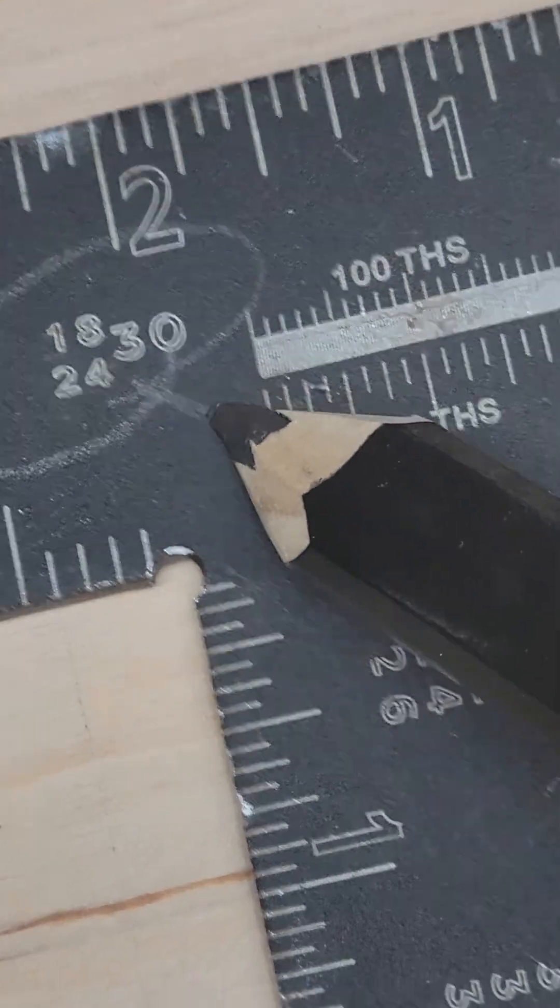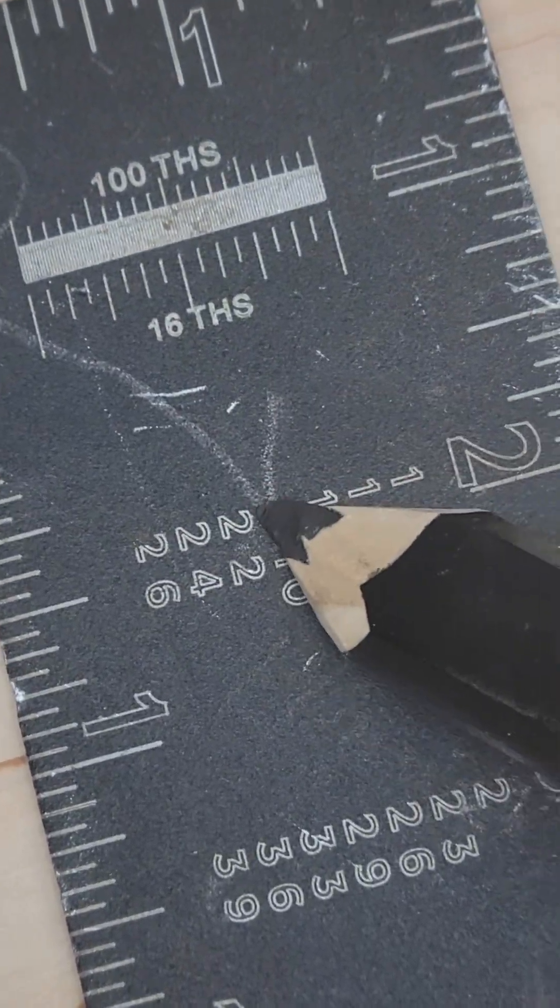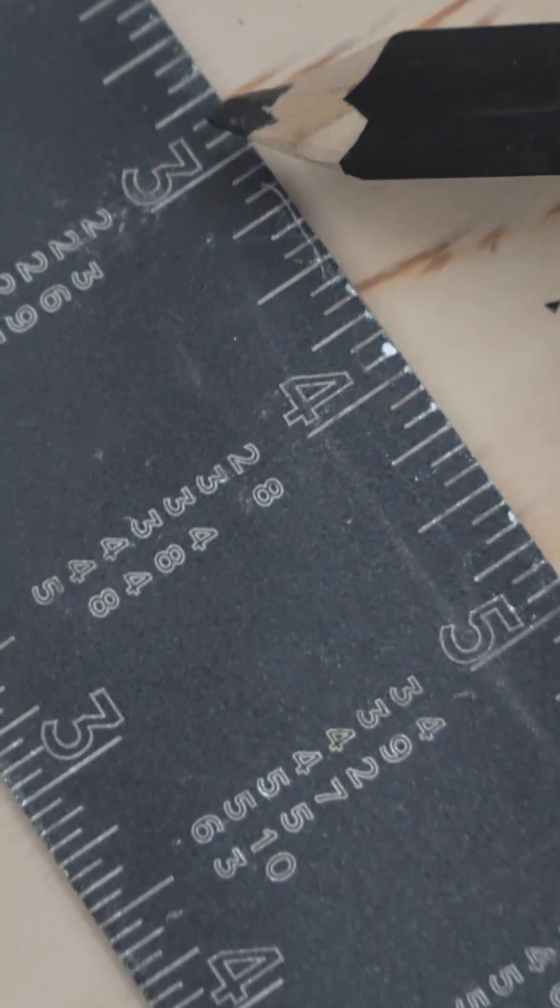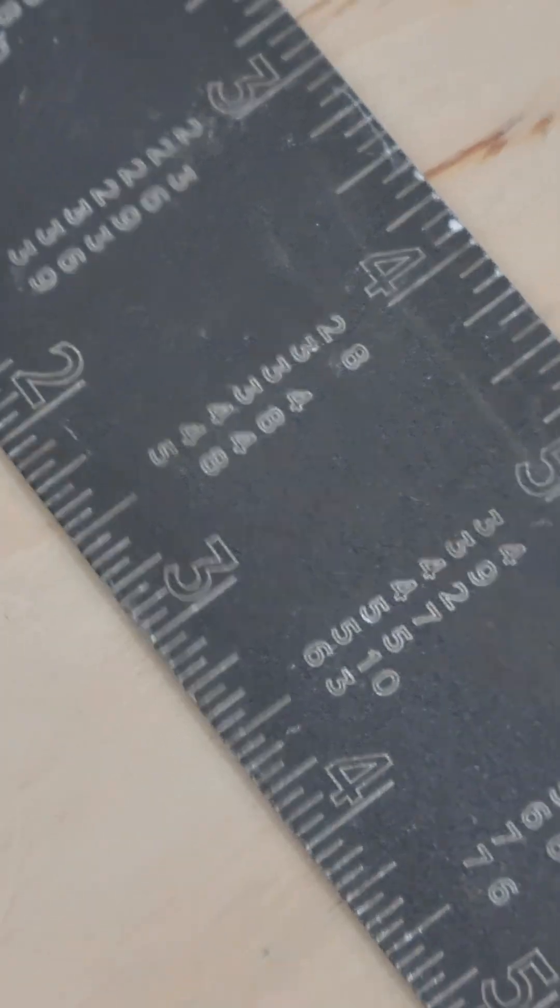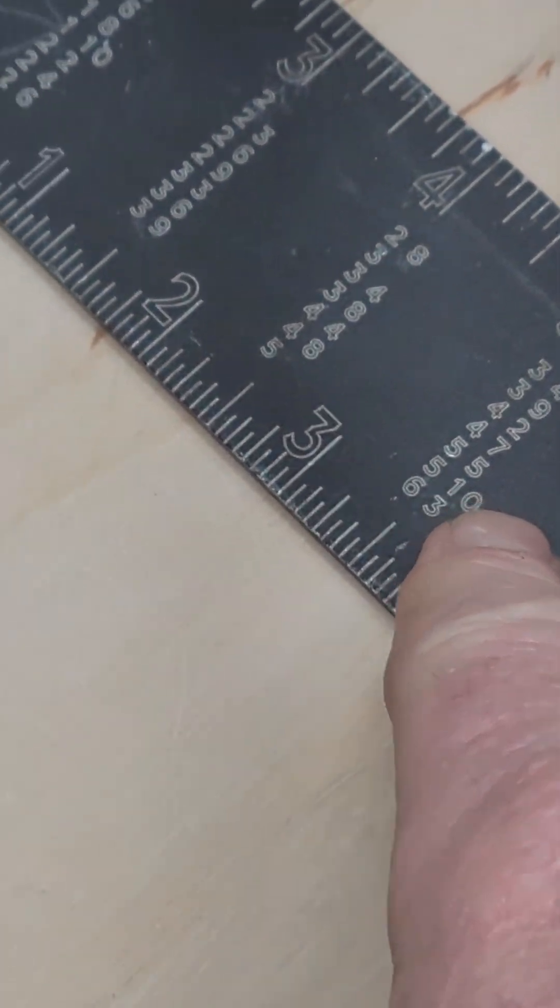This right here is going to link us back to the Essex board measure scale right here, which is your three, four, five rule that's embedded on the Essex board measure scale.